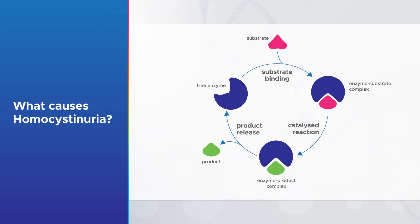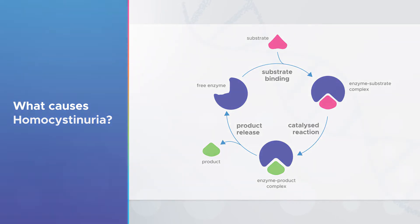Our body needs a number of different enzymes to help it process homocysteine. When you have homocystinuria, you either don't make these enzymes, or you don't make enough of them, or they don't work properly.